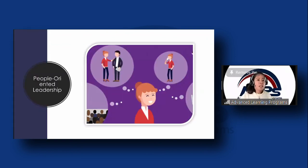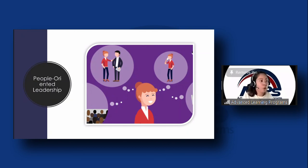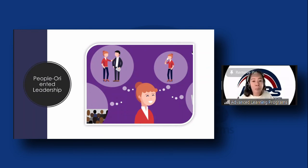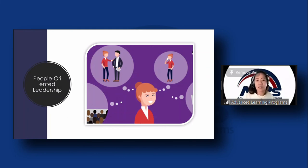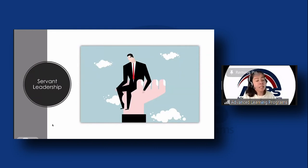People-oriented leadership is the opposite. Leaders here encourage good teamwork and creative collaboration. They are focused on organizing, supporting, and developing their own team. People-oriented leaders always capitalize on their members — they want to bring out the strengths of their members because they believe that if they strengthen their members, the output is also good. You can also call these leaders 'enablers' — leaders who enable their people.